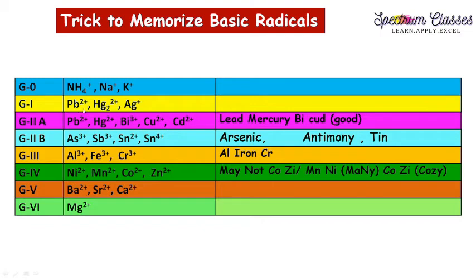Coming to Group One: lead, mercury, and silver are placed here because their chlorides are insoluble. In Group Two, we again have lead and mercury, and thereafter bismuth, copper, and cadmium. A trick to memorize this is 'lead mercury — B, Cu, Cd' — where Cu stands for copper and Cd for cadmium. From bismuth we get a hint for the next group, Group Two-B, which contains bismuth, arsenic, antimony, and tin.